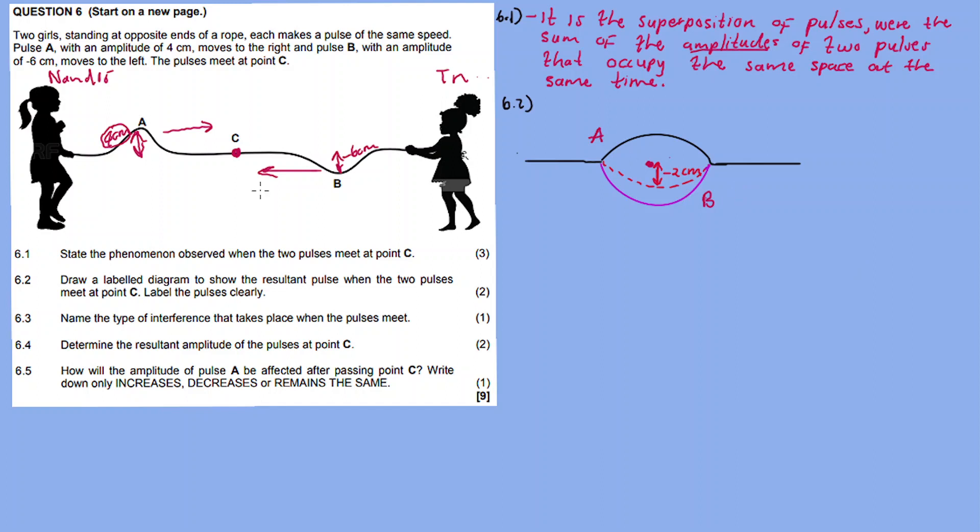So this is the diagram - a tiny pulse with an amplitude of minus two centimeters. 6.3: Name the type of interference that takes place when the pulses meet.